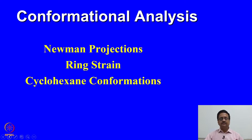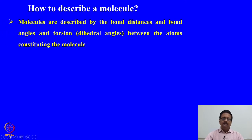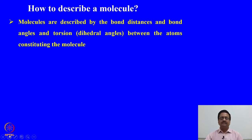In this series of lectures, we will talk about Newman projections, ring strain and cyclohexane conformations. The first question we would like to address is how to describe a molecule. Molecules are generally described by the bond distance, bond angles, and torsion angles — that is the dihedral angles — between the constituting atoms. Once you know the bond angles, bond lengths and torsion angles, we would also like to know how those atoms are oriented in space to understand their stereochemistry.